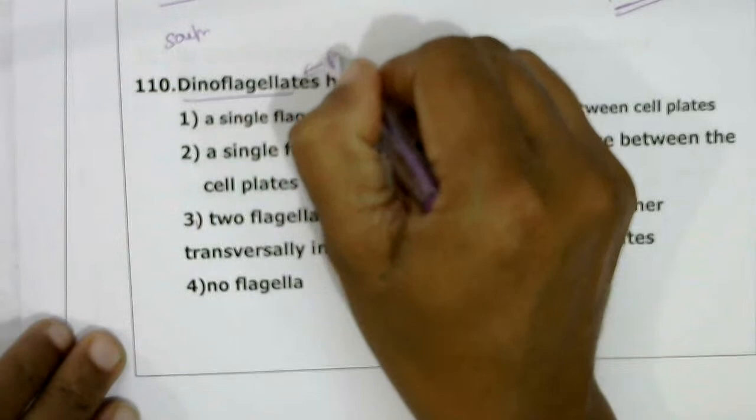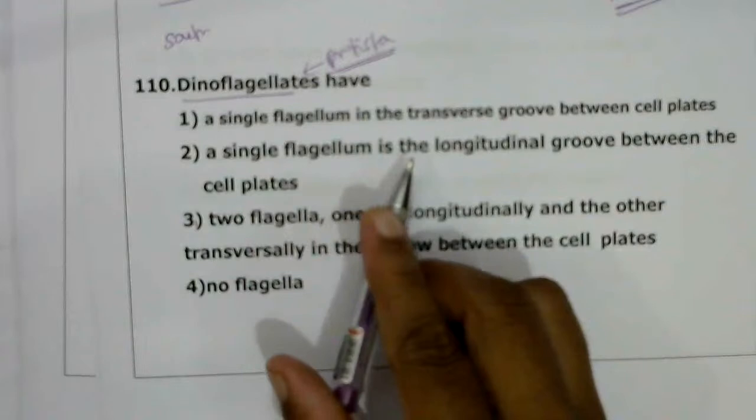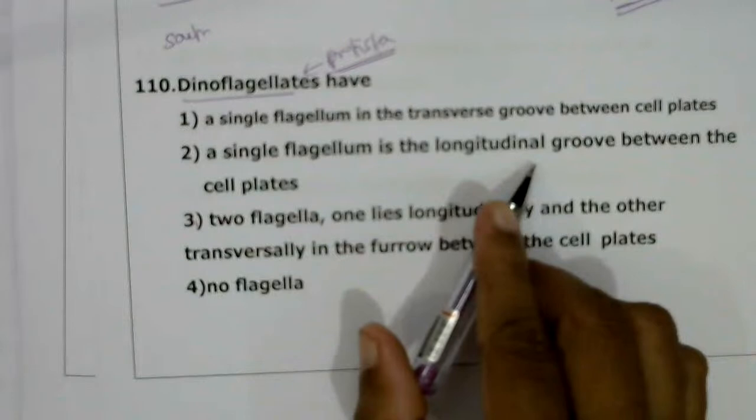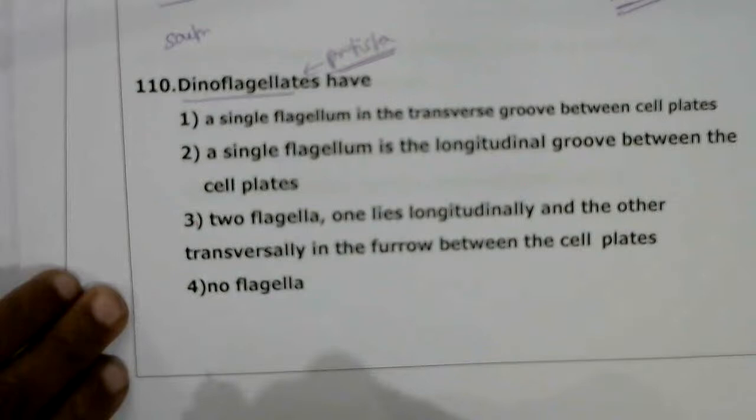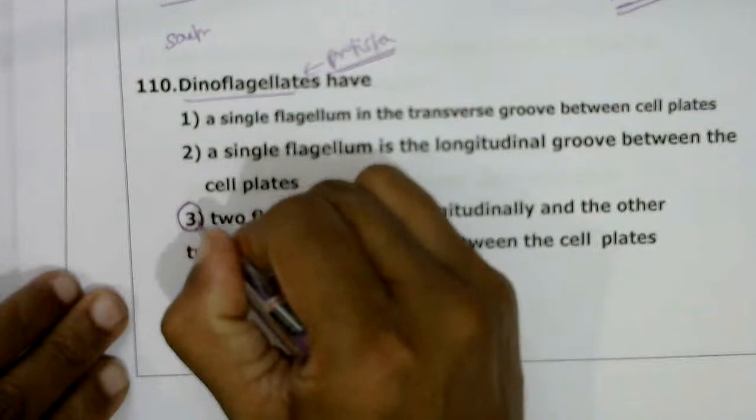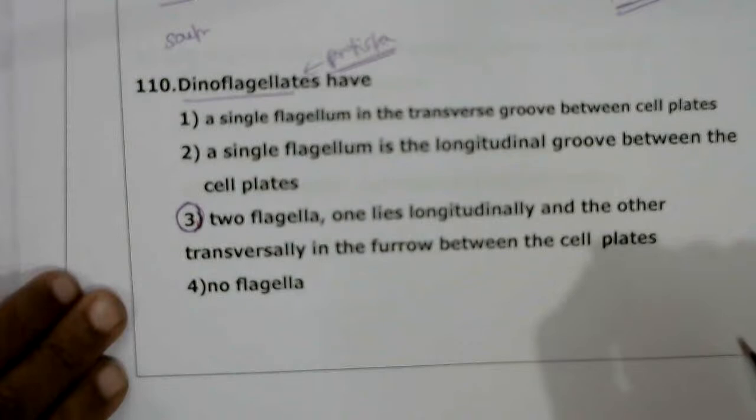Next question on dinoflagellates: dinoflagellates are protists. They usually contain two flagella — one transversely inserted and one longitudinally inserted in between the cell plates. The cell wall is present as cell plates. The correct answer is the third option.